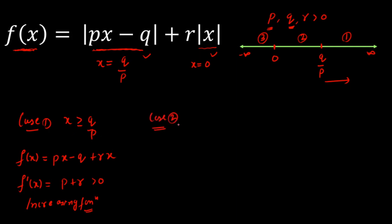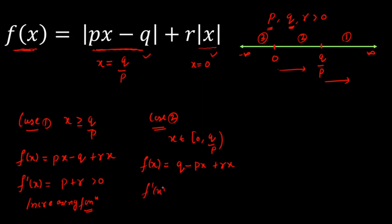Case two: x belongs to the interval 0 to q over p (with q over p excluded). In this range, the first modulus is negative, so f of x equals (q minus px) plus rx. Differentiating, f'(x) equals r minus p. The nature of the function depends on the relationship between r and p.